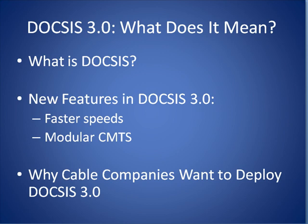Specifically, we describe how the new standard achieves faster download and upload speeds in a cable network, and its support for the modular CMTS architecture. Throughout this tutorial, we highlight why cable companies want to deploy DOCSIS 3.0 equipment.